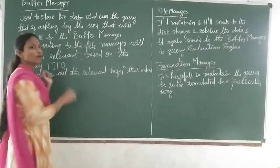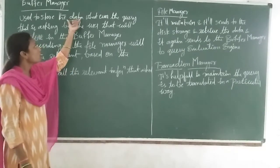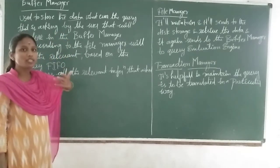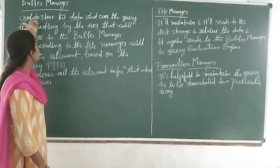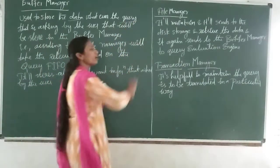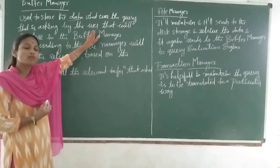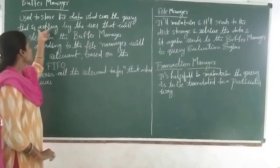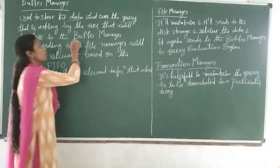Data means facts of records. Facts of records are like text, a number, an image, or any audio. Data is nothing but facts of records. Whatever data you are sending to store in the database system — the buffer manager is used to store that data. Whatever query is accepted, whatever query the user is asking — the user is asking to store their data in the database system, and that will be stored in the buffer manager.